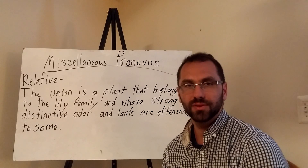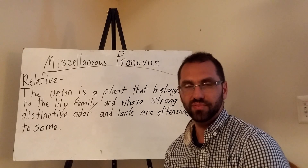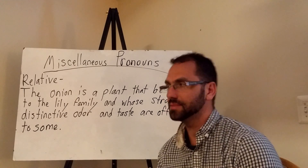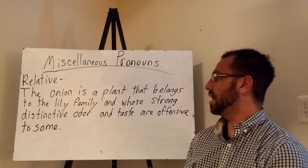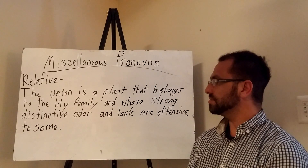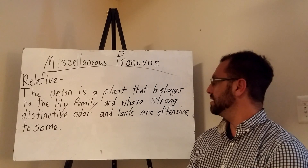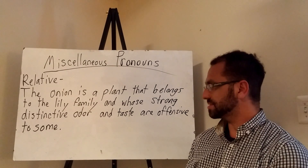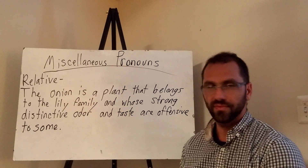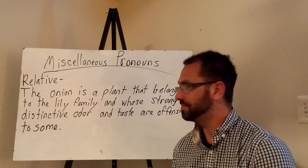In this example, we're going to underline the relative pronouns in the following sentence: 'The onion is a plant that belongs to the lily family, and whose strong distinctive odor and taste are offensive to some.'